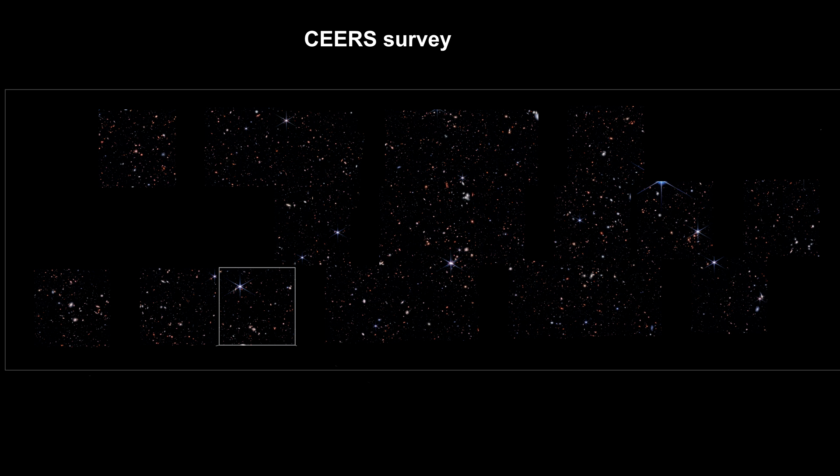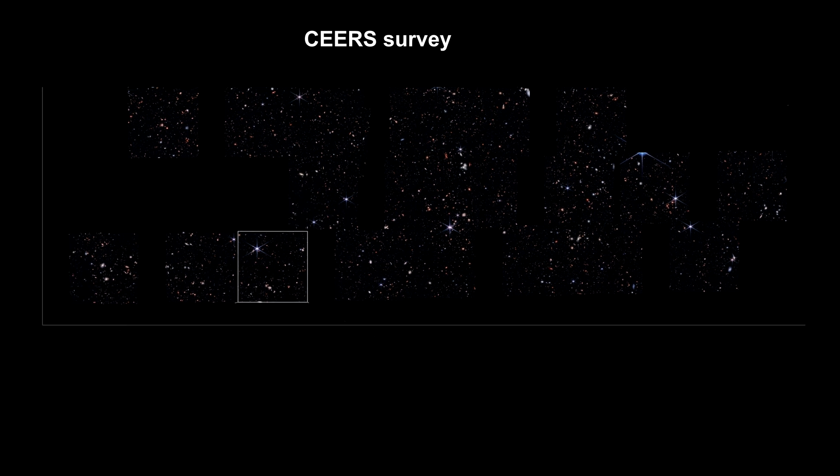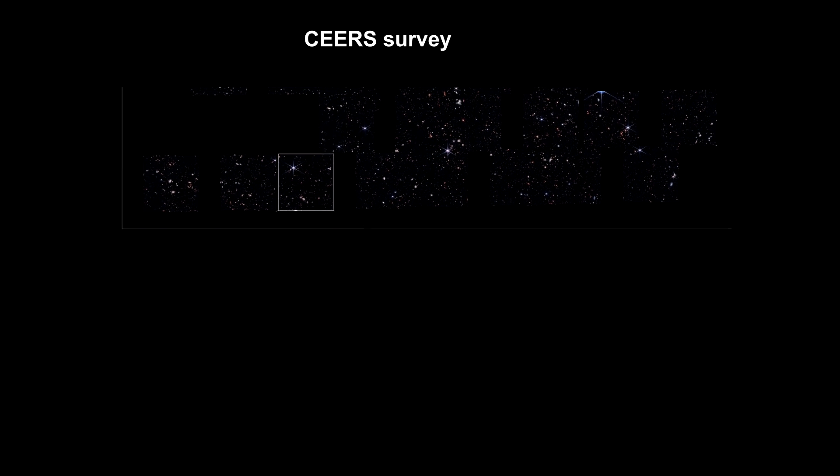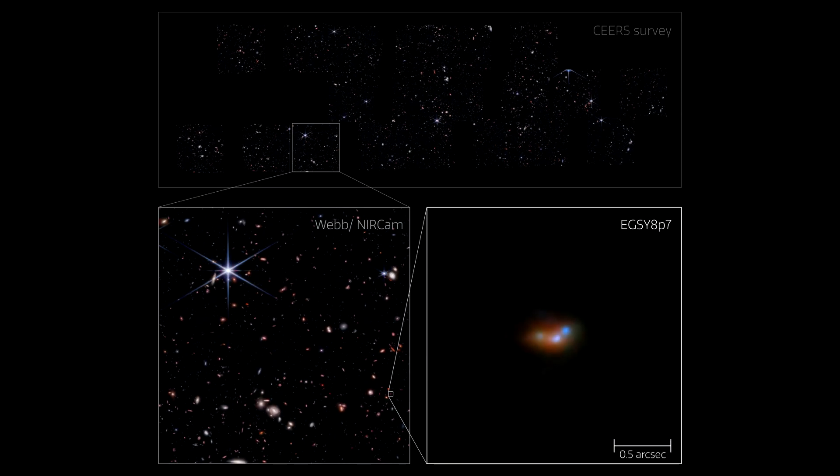In the same year, another team of astronomers was searching for answers to the same question: what drove the era of re-ionization? This team used the CHEERS survey data. They found a galaxy they named EGSY-8P7 with a redshift of 8.683. Its light traveled 13.1 billion light-years to reach us.